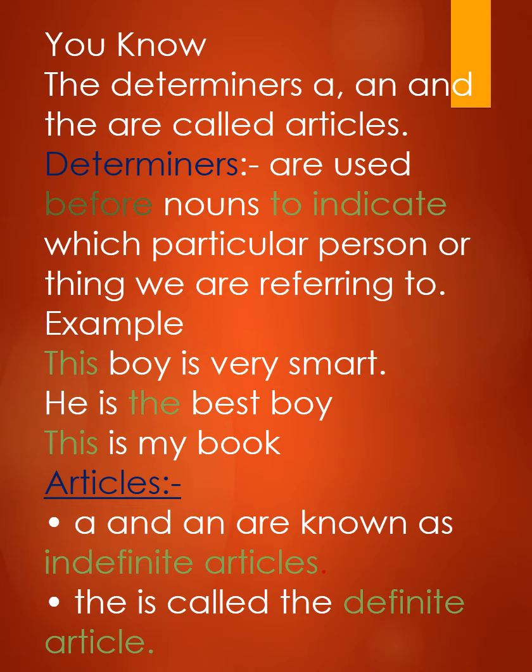Isi tarah se aate hain Quantifiers — jinko hum quantity mention karne ke liye use karte hain. Jaise: some, any, much, many, several. For example, 'Many students were present in a class.' Yahan 'students' noun hai aur usse pahle 'many' aa raha hai, toh 'many' Determiner ho jayega.